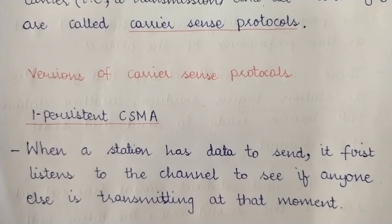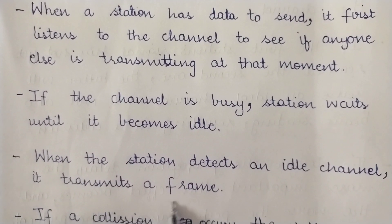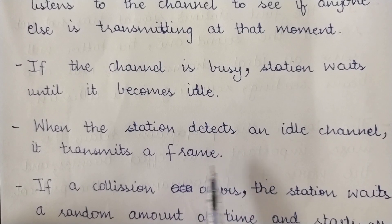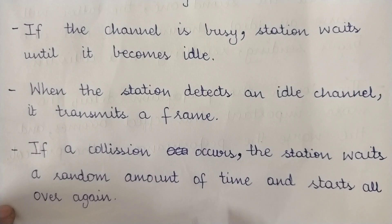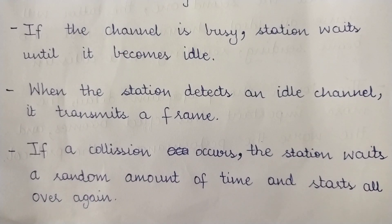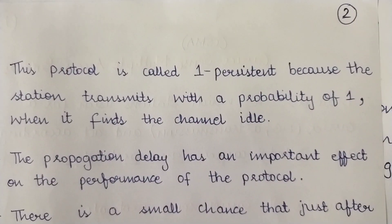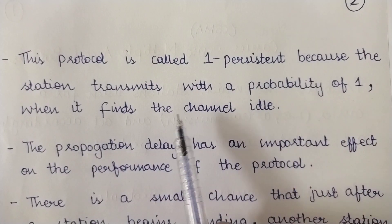If the channel is busy — that is, carrying another station's data — the station waits until the channel becomes idle. When it detects an idle channel, it transmits a frame. Even after sensing the channel, finding it free, and sending a frame, if a collision occurs, the station waits for a random amount of time and starts all over again. This protocol is called 1-Persistent CSMA because the station transmits with a probability of 1 when it finds the channel idle.